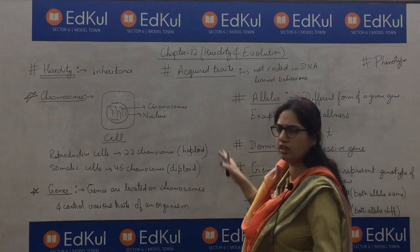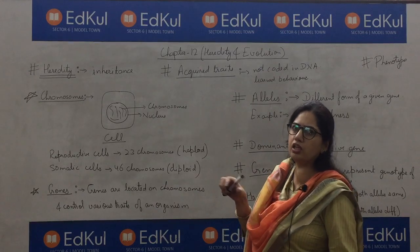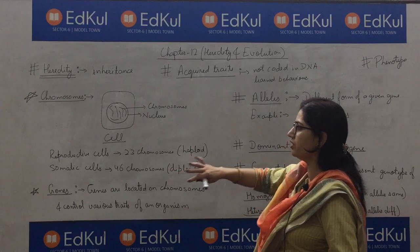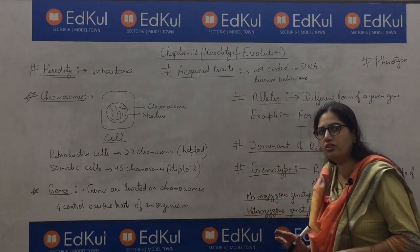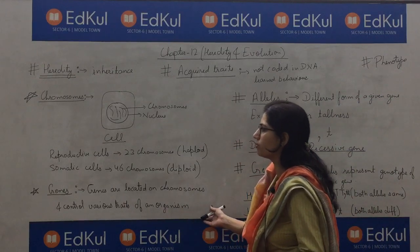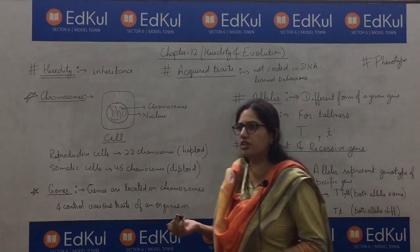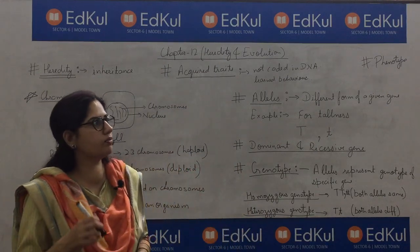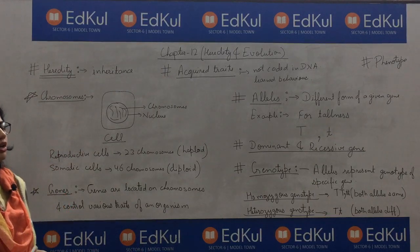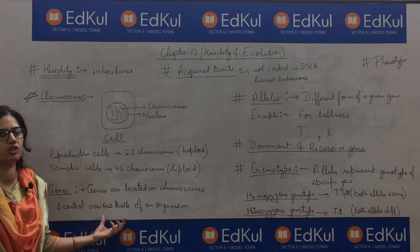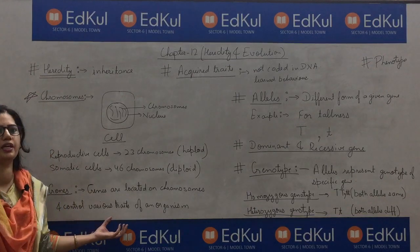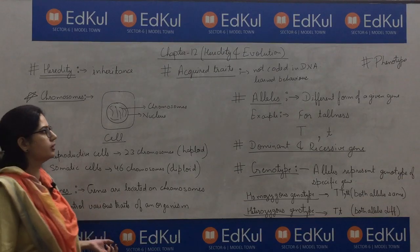Chromosomes are present inside the nucleus of the cell, and these chromosomes are made up of DNA. Genes are coded on DNA and are located on chromosomes. Genes control various traits of an organism — like the shape of your nose, the color of your skin, the shape of your ears, the color of your eyes, and even your height. All these characteristics are controlled by genes, which we inherit from our parents.